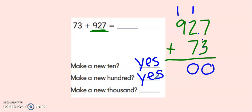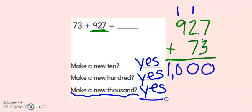And in the hundreds place, I have nine hundreds plus one hundred. Hmm, that's ten hundreds. Wait a minute. Ten hundreds, that gives me one thousand. So in this question, did I make a new thousand? Yes I did because I had ten hundreds, which gives me a thousand.